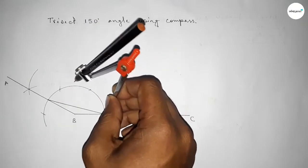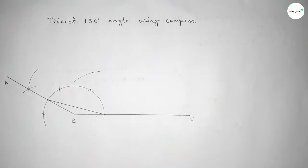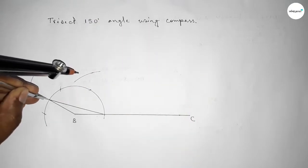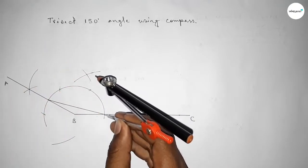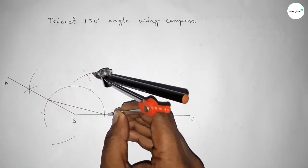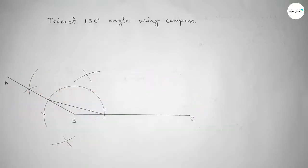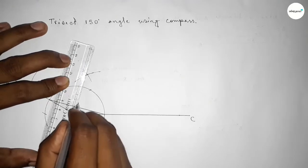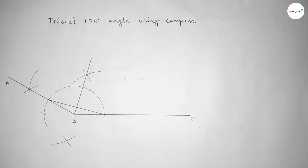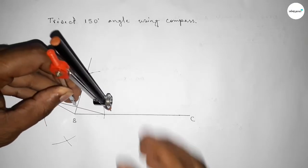Putting the compass here and taking greater than half of this line, drawing an arc. Putting the compass on the other end with the same length and cutting here, drawing an arc and cutting here again. Both curves intersect at two points — joining these.